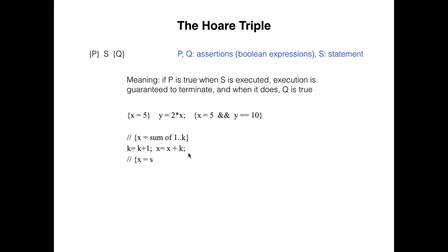Some people put braces around assertions in a comment in order to distinguish assertions from other kinds of comments. We will not follow that practice, writing the Hoare triple instead as shown here.